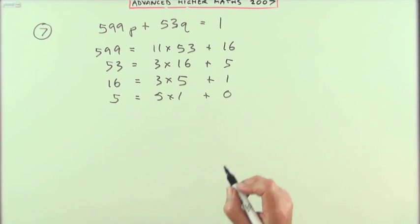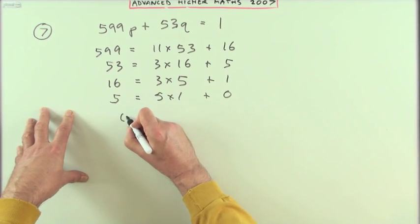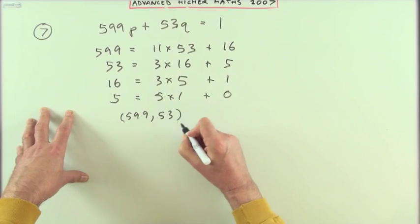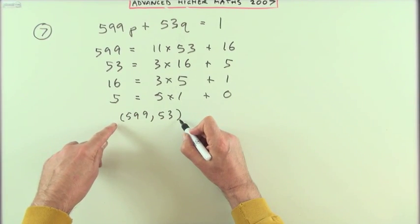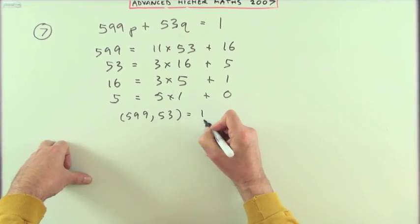Those numbers were in fact co-prime. That's the notation for the greatest common divisor. And that equals 1.